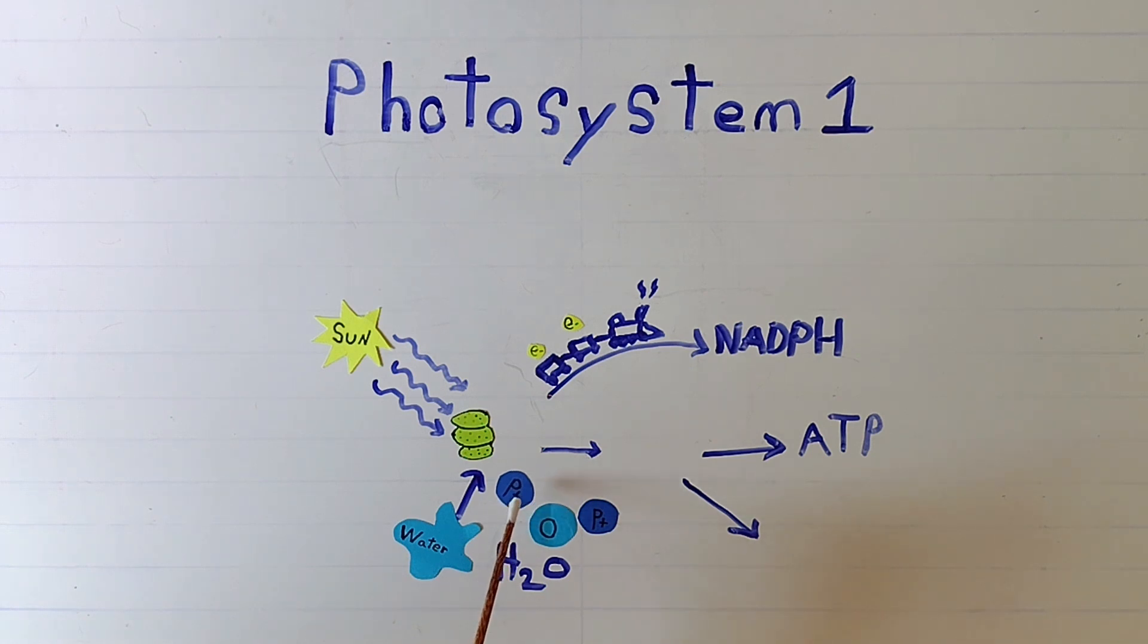Then the leftover protons are used to form ATP, which is the universal energy source for all living cells, and oxygen is released as a waste product.